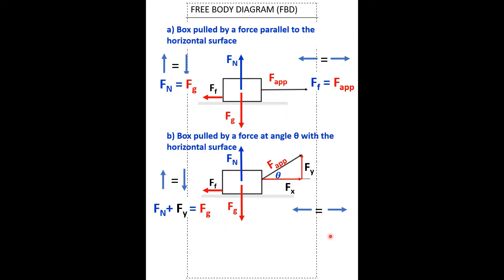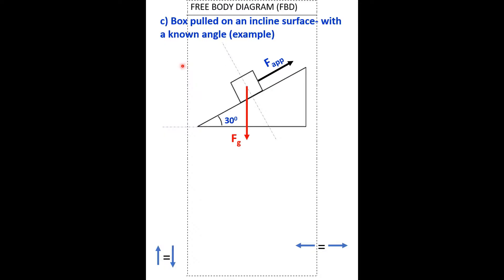It's important to indicate the tip of the arrow to group all forces going in one direction. Horizontally, the sum of forces to the left equals the sum of forces to the right — we have just two forces, so F-F equals F-X. Now the free body diagram of a box pulled on an inclined surface with a known angle — in this case, 30 degrees. This box is being pulled by a force F upward.